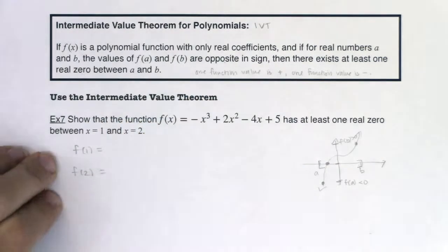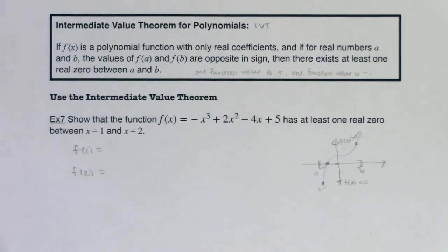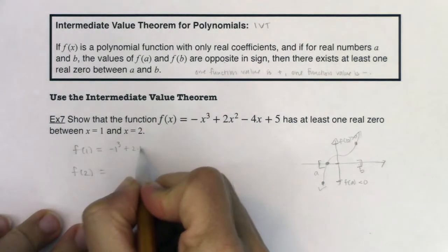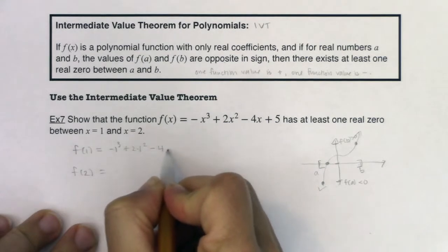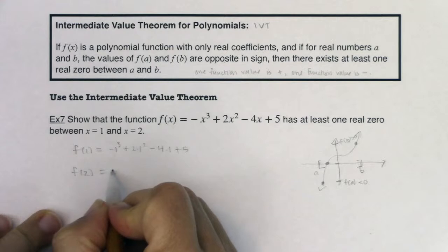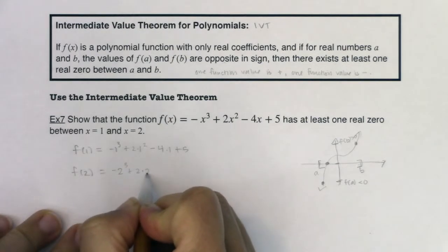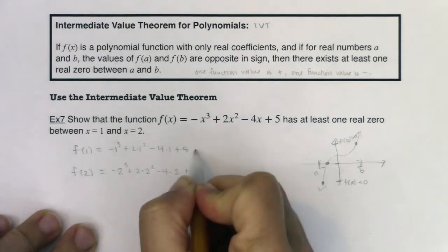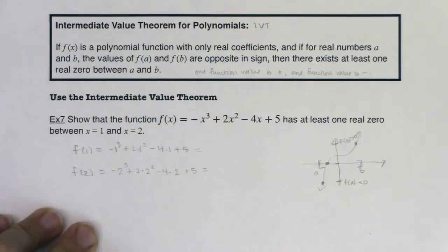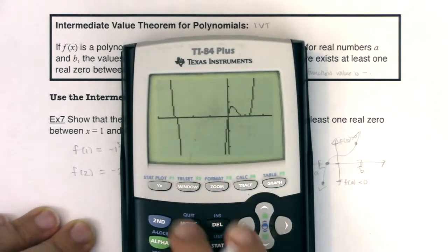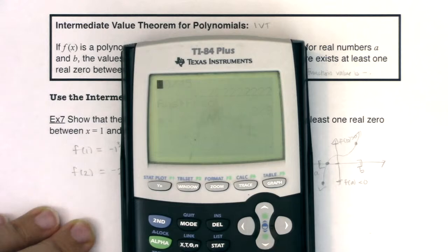Now, again, I'm lazy. I want to use the store function on my calculator. And I could absolutely crunch these numbers by hand. You're more than welcome to do -1 cubed, plus 2 times 1 squared, minus 4 times 1, plus 5. And then you could repeat that for 2, -2 cubed, plus 2 times 2 squared, minus 4 times 2, plus 5. But like I said, I want to be as efficient as I can. And that's going to involve using that store function. So let me go back to my home screen, clear all of that out.